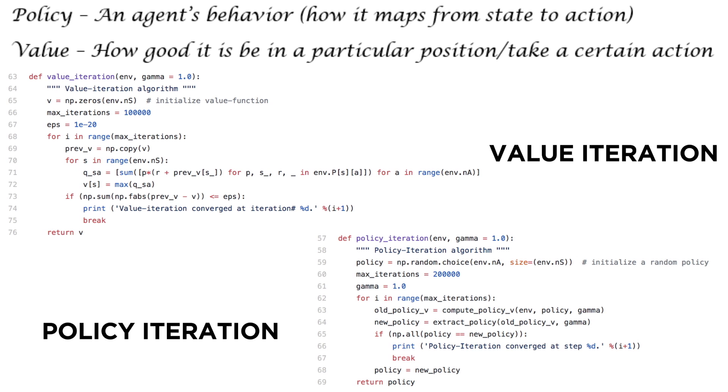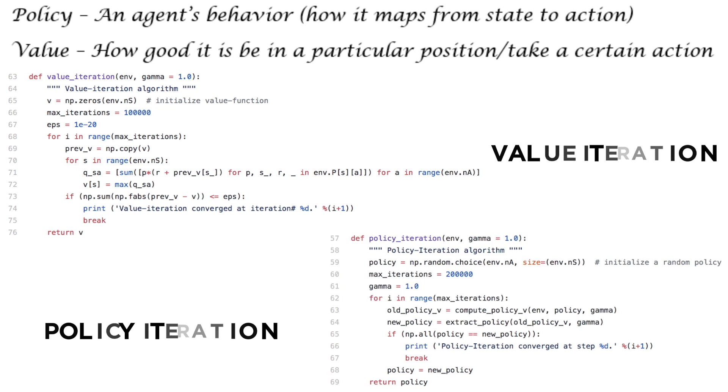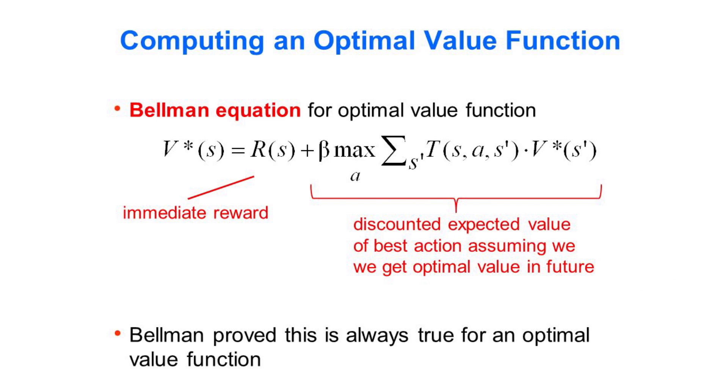It represents how good is a state for an agent to be in. It is equal to the expected total reward for an agent starting from state S. The value function depends on the policy by which the agent picks actions to perform. Among all possible value functions, there exists an optimal value function that has higher value than other functions for all states. The optimal policy is the policy that corresponds to the optimal value function.